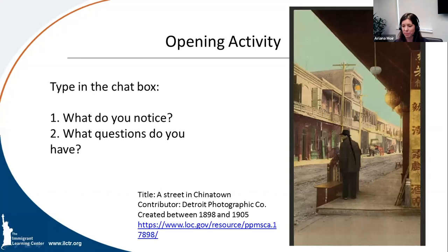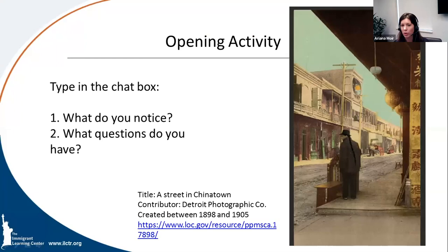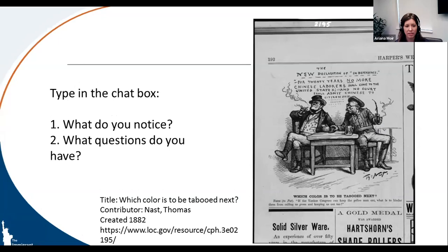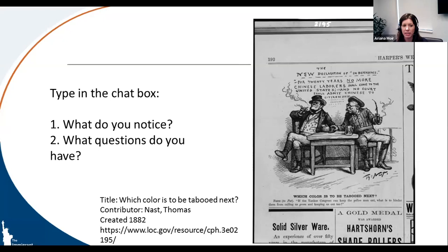We're starting with an opening activity. Look at the image here and type in the chat box: what do you notice, or what questions do you have? The title of this one is A Street in Chinatown, and it was created sometime between 1898 and 1905. Now, our second image is titled Which Color is to be Tabooed Next? It was created in 1882 and appeared in Harper's Weekly. It reads at the top, 'The New Declaration of Independence' — with 'independence' in quotes — and states: 'For 20 years, no more Chinese laborers shall come to the United States, and no court shall admit Chinese to citizenship.'